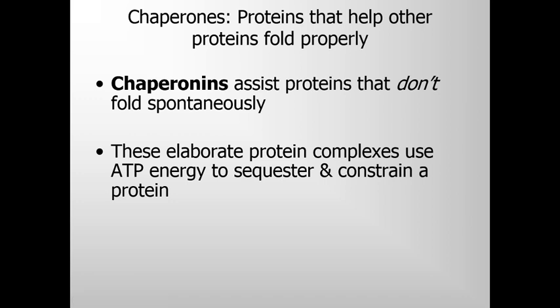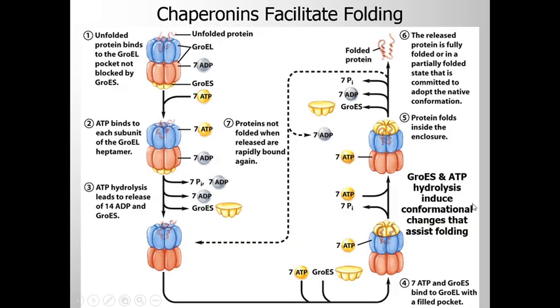Chaperonins, the second family of chaperones, are elaborate protein complexes required for the folding of some cellular proteins that do not fold spontaneously. These complexes use ATP energy to sequester and constrain a protein. In E. coli, an estimated 10 to 15% of cellular proteins require the resident chaperonin system called GroEL/GroES for folding under normal conditions. This figure shows a proposed pathway for the action of E. coli chaperonins GroEL and GroES.